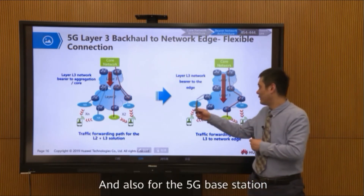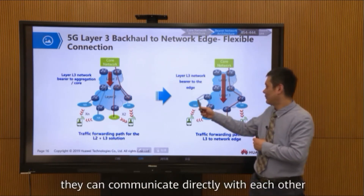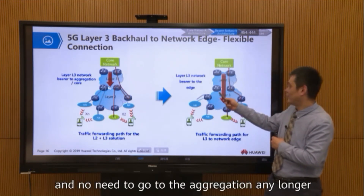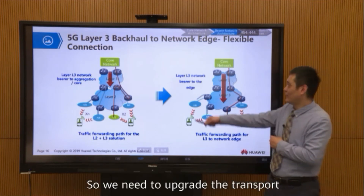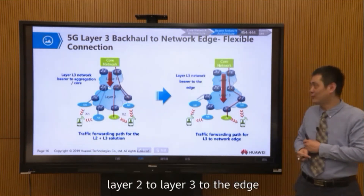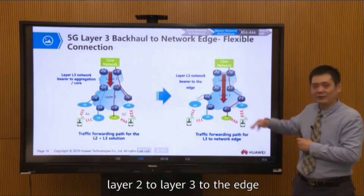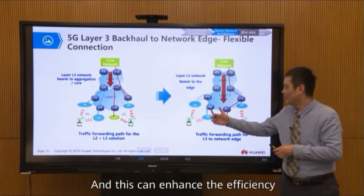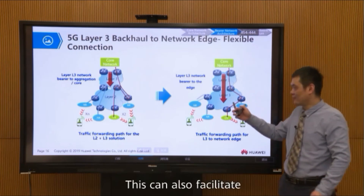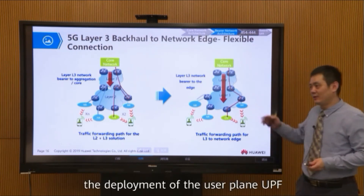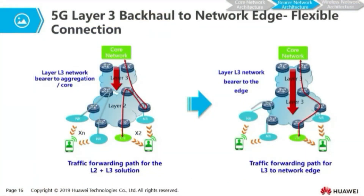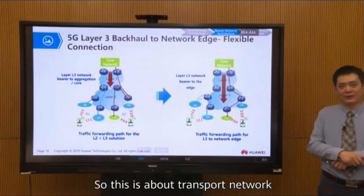For the 5G base stations, they can communicate directly with each other and no longer need to go to the aggregation layer. So we need to upgrade the transport, or bearer network, from Layer 2 to Layer 3 to the edge. This can enhance the efficiency and also facilitate the deployment of the user plane, UPF. So this is about the transport network.